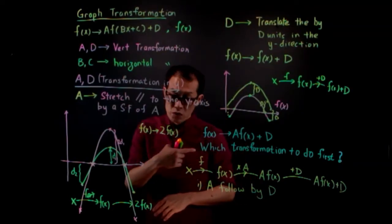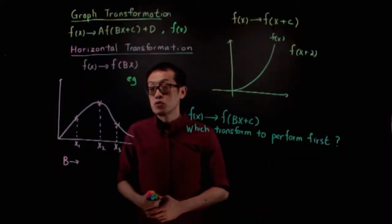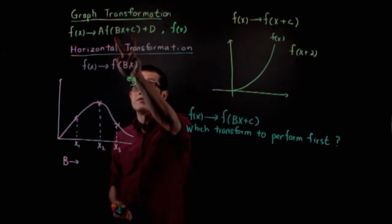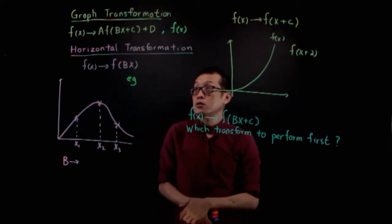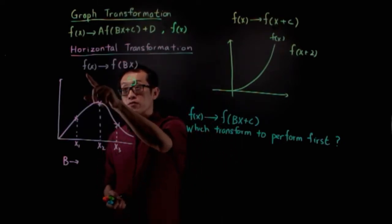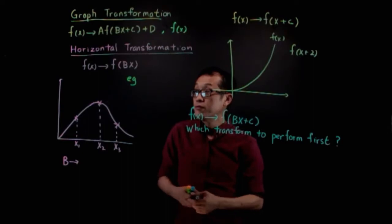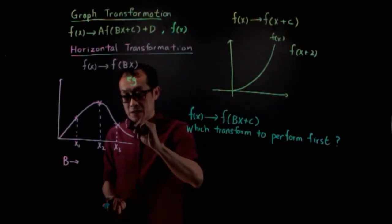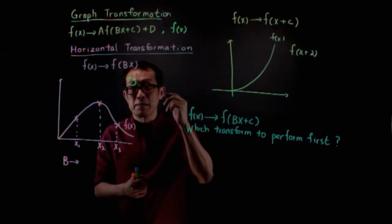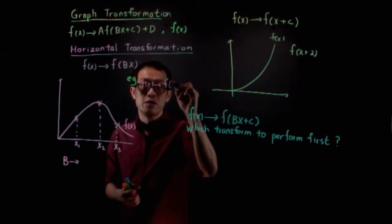Now let's move on to horizontal transformation. Horizontal transformation is governed by the letters b and c. Let's look at b first. You're asked to transform the graph f(x) to f(bx). Let's assume b is 2, so you're asked to transform f(x) to f(2x).